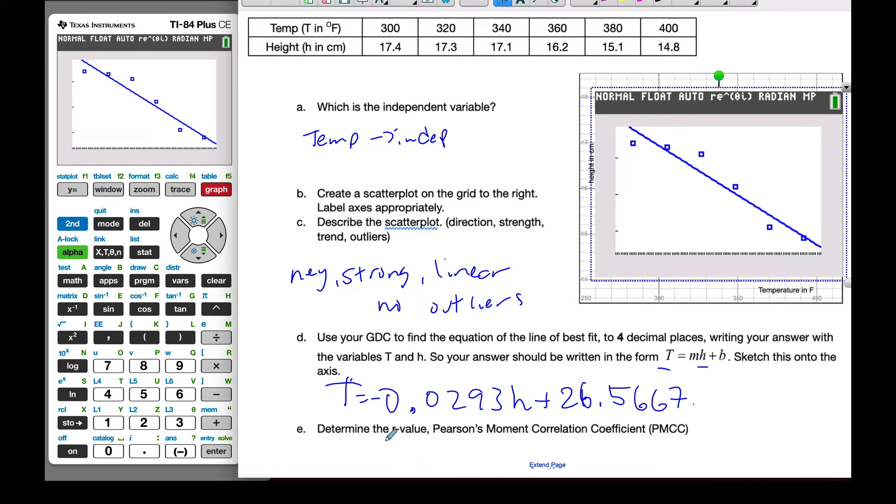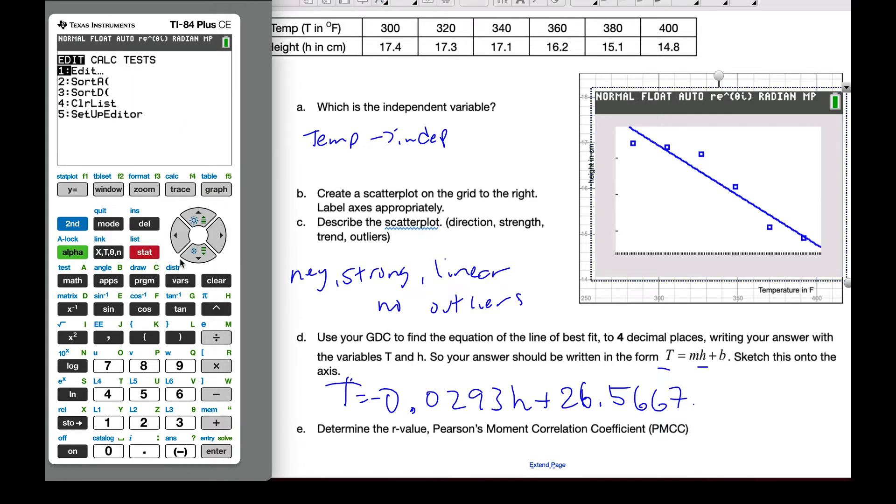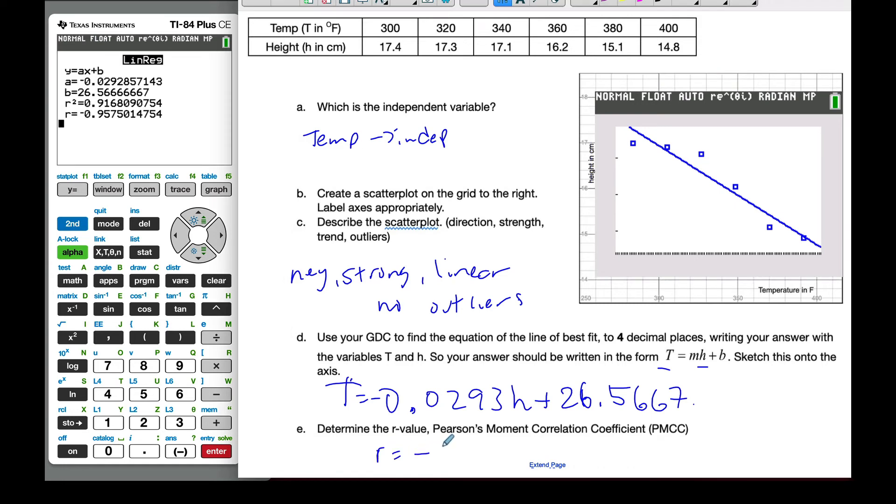And then the last thing is find the R value, the Pearson's moment correlation coefficient, sometimes called R, sometimes called the correlation coefficient. And if you go to our calculations, we did see it. When we look at this, my R value is right here. So R is equal to negative 0.958 to three significant figures.